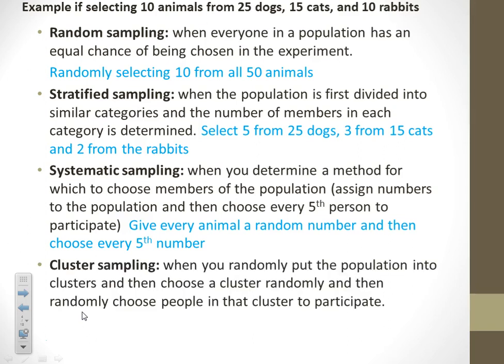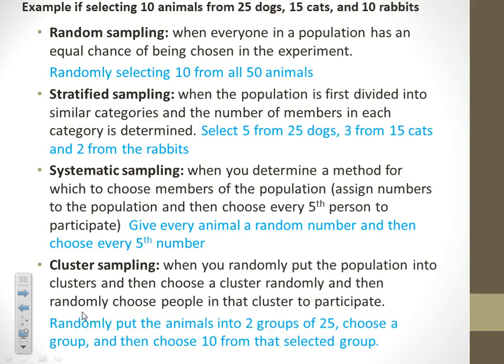For cluster, we'd mix them all up, put them in, in this case, they said two groups of 25. You could do five groups of 10. Whatever you want to do, pick one of those groups and then choose 10 animals from that selected group. So that's how you would do the four different types there.